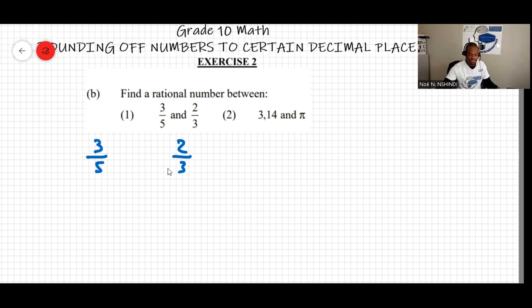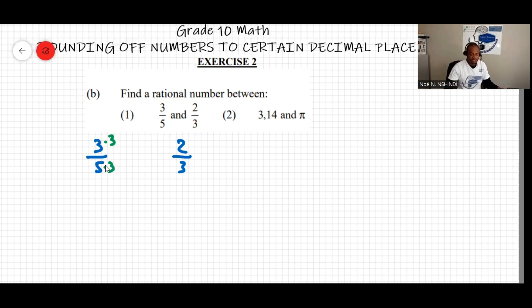The LCM of 5 and 3 is 15 because both 5 and 3 divide into 15. To change the denominator of three-fifths to 15, multiply top and bottom by 3. To change two-thirds to 15, multiply top and bottom by 5. This gives nine over 15 and ten over 15.